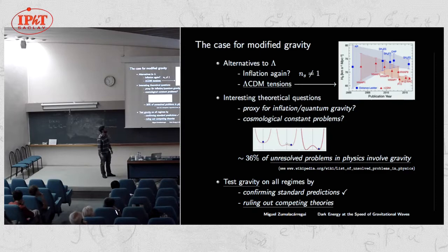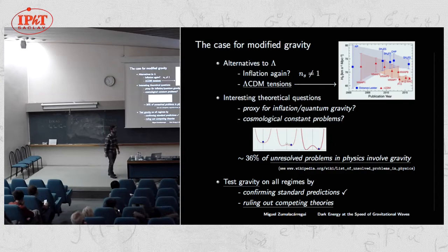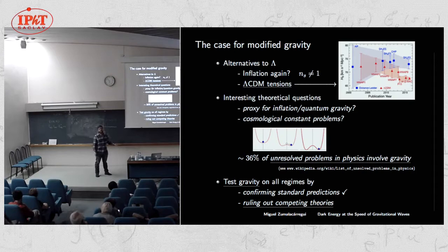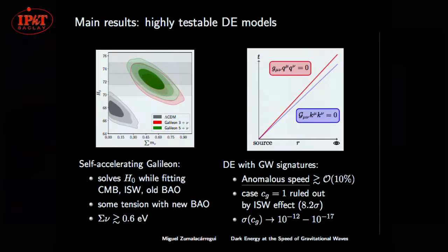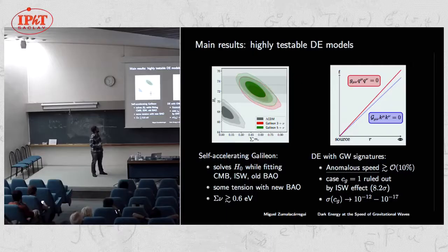Even if something weird about gravity — related to dark energy, inflation, or whatever — it might teach us valuable lessons about very different things. The third reason to modify gravity is to test it: to obtain predictions in as many theories as possible, use them not only to validate standard predictions but also to rule out theories, and do it in as many regimes as we can possibly access.